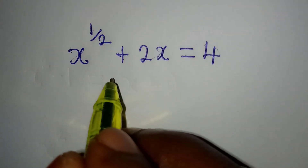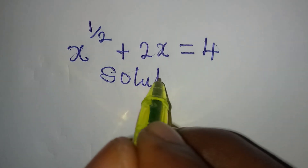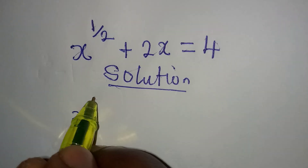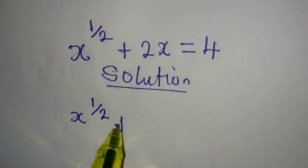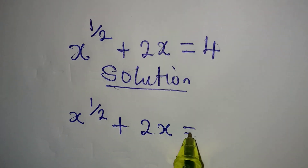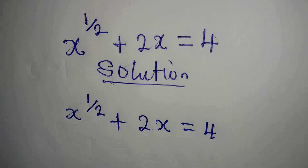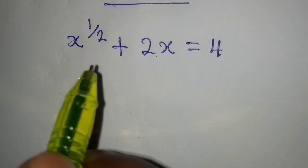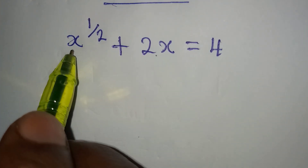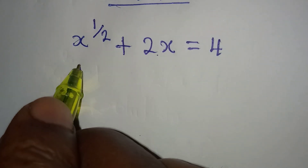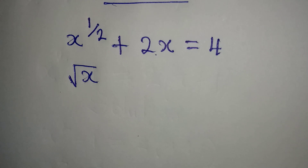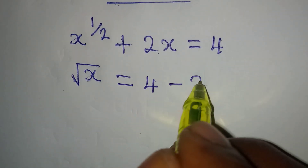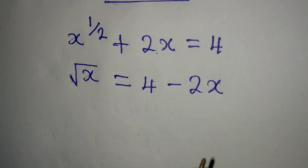Let us provide the solution to this problem: x to the power of 1 over 2 plus 2x equals 4. By the way, x to the power of 1 over 2 is the same thing as the square root of x, and it will now be equal to 4 minus 2x.